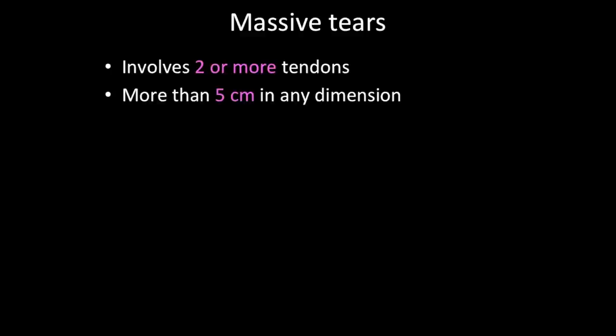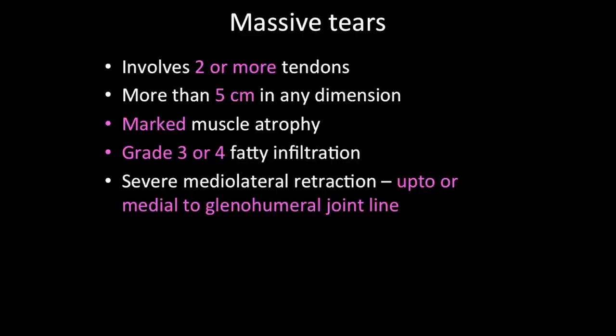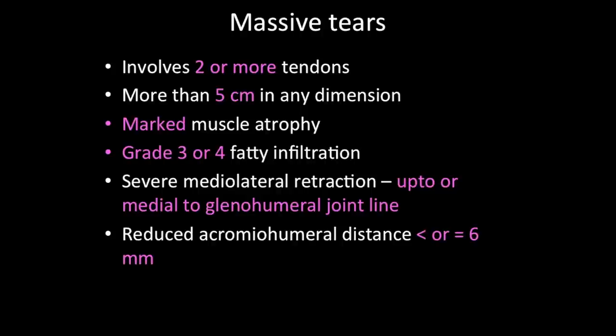Massive tears by definition involve two or more tendons and are more than five centimeters in any dimension. Other criteria considered by orthopedic surgeons include marked muscle atrophy, Grade 3 or 4 fatty infiltration, severe medial-lateral retraction up to or medial to the glenohumeral joint line, and reduced acromicohumeral distance — normally 7 to 14 mm, reduced when equal to or less than 6 mm. There is no fixed treatment protocol; some surgeons operate depending on clinical symptoms and the degree of atrophy and fatty infiltration. All these findings must be reported, as massive tears are associated with poorer prognosis.